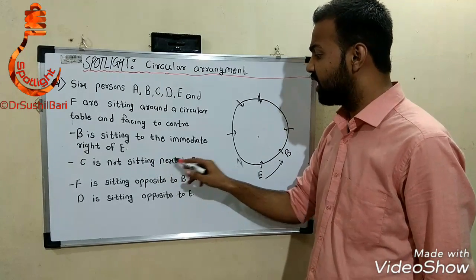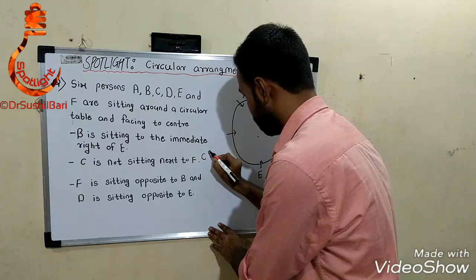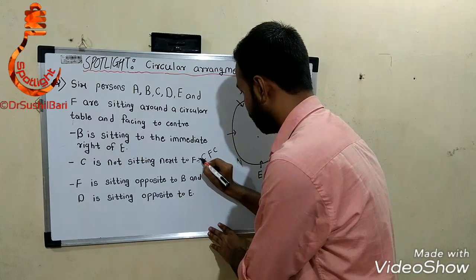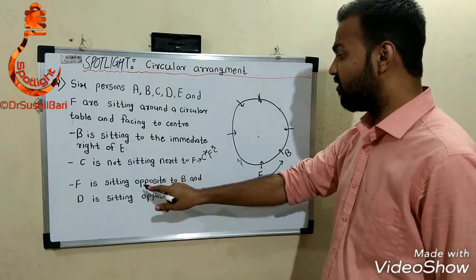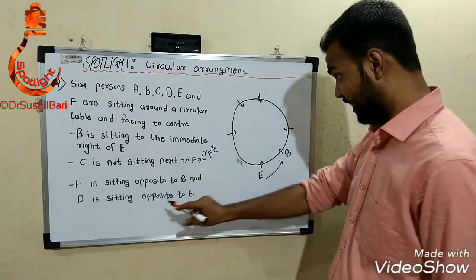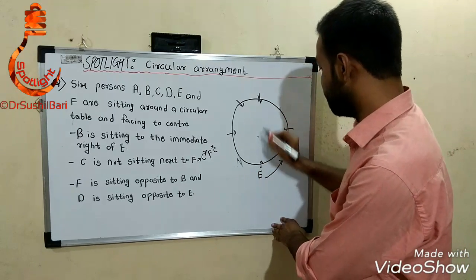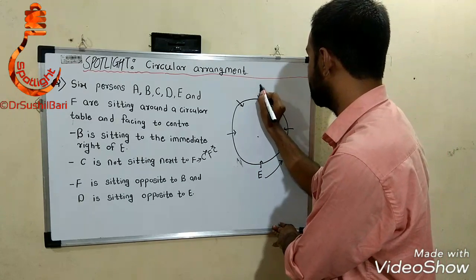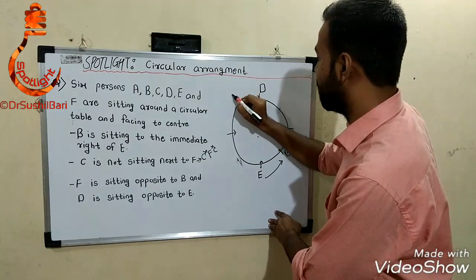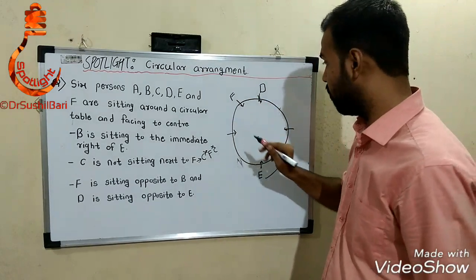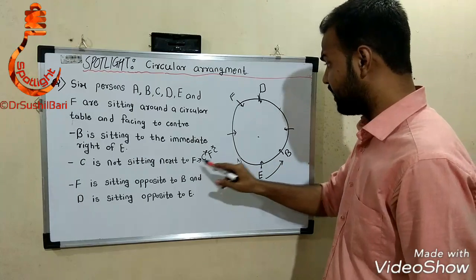C is not sitting next to F, meaning C will never be the immediate neighbor of F. F is sitting opposite to B, so F is placed opposite to B's position. D is sitting opposite to E, so D is placed opposite to E's position here.